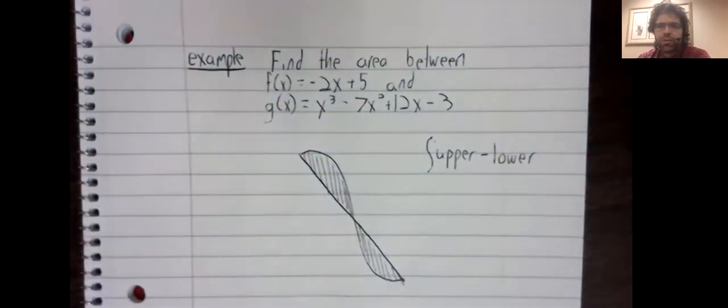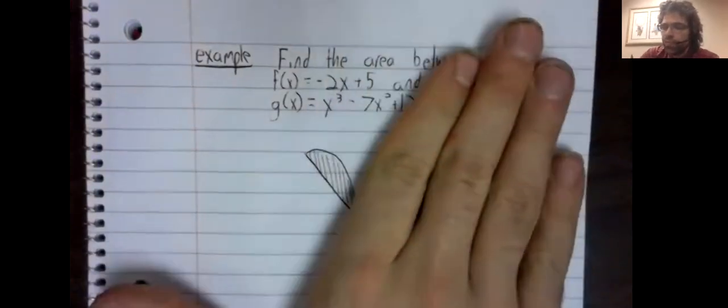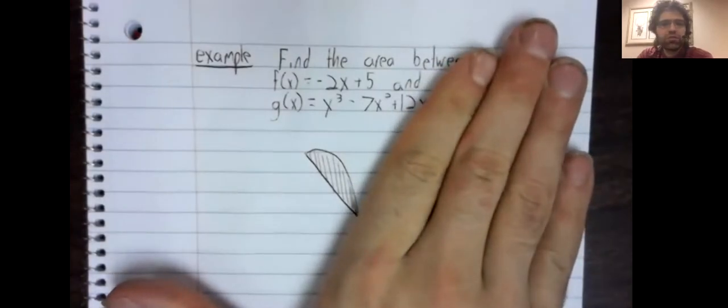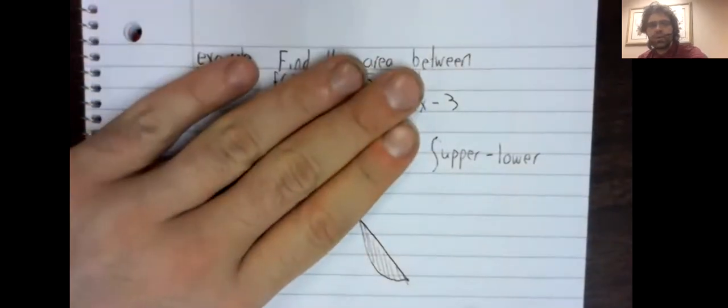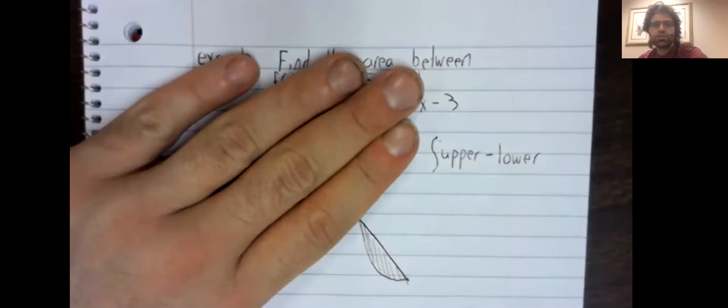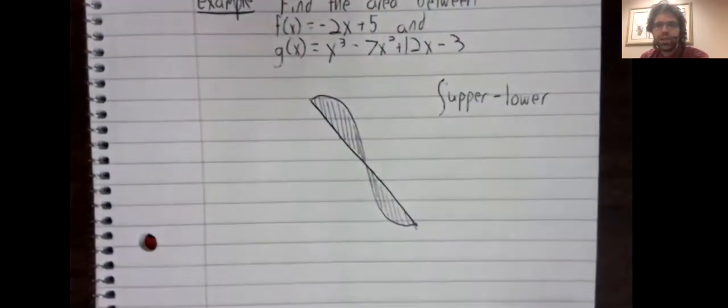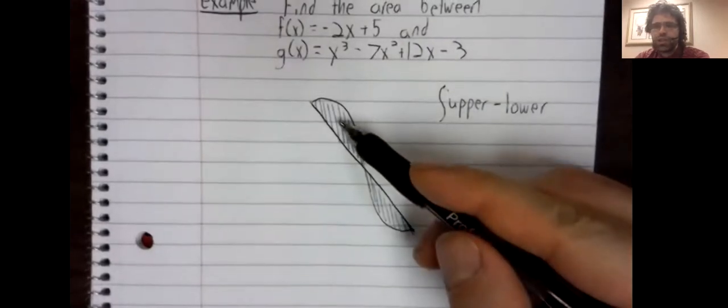If we look at this part of the graph, the cubic is the upper curve and this straight line is the lower curve. Here they switch. Now the straight line is the upper curve and the cubic is the lower curve. The way we're going to deal with this is we're going to split the problem into two. We'll find the area of this region, then we'll find the area of that region.